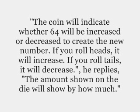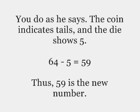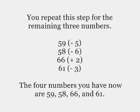If you roll heads, it will increase. If you roll tails, it will decrease, he replies. The amount shown on the die will show by how much. You do as he says: the coin indicates tails and the die shows 5, so 64 minus 5 equals 59. Thus, 59 is the new number. You repeat this step for the remaining 3 numbers.